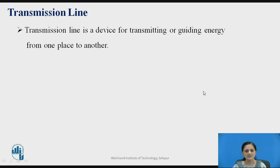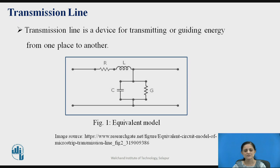What is a transmission line? A transmission line is a device for transmitting or guiding electromagnetic energy from one place to another place. This equation in terms of R, L, C, and G can be defined for the transmission line. The transmission line equation can be defined in terms of voltage as well as in terms of current by taking circuit theory and Ohm's law.